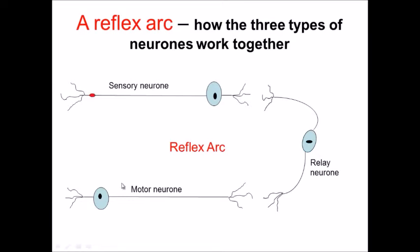The temperature receptors in your hand would then generate an impulse in the sensory neuron. That would send that impulse along the sensory neuron, through the cell body and along the dendrites. You've got this section here which is a gap between the sensory neuron and the relay neuron and that's known as the synapse.